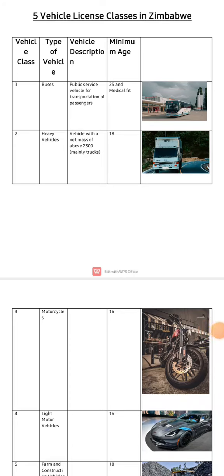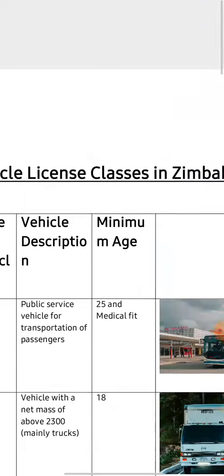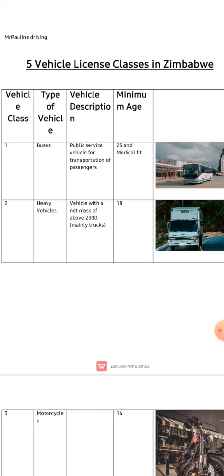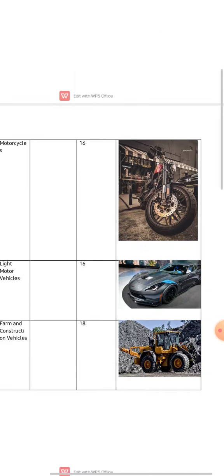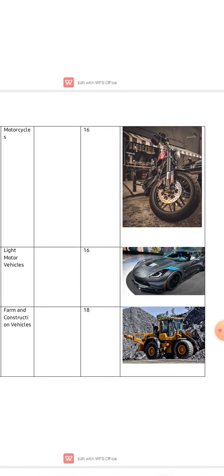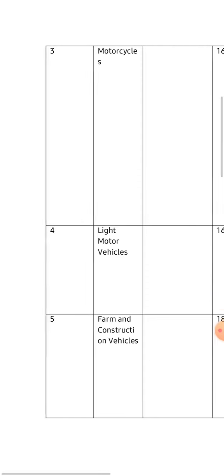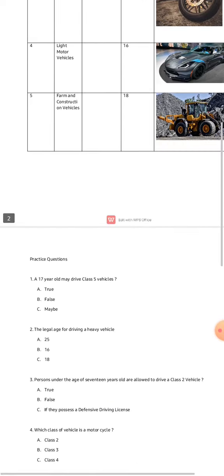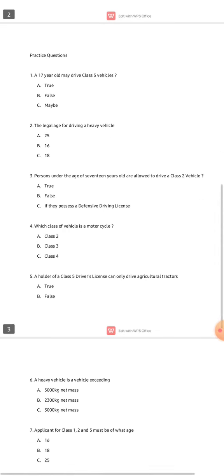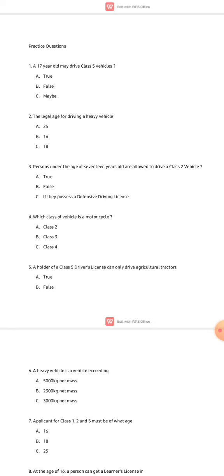Hello, welcome to this video. My name is Mr. Paul and thank you so much for tuning in. Today we're going to be looking at the five vehicle license classes that we have in Zimbabwe — class one, class two, class three, class four, and class five. I've put some images so you can have a visual appreciation, and after we've discussed this I also have ten practice questions to cement your knowledge.